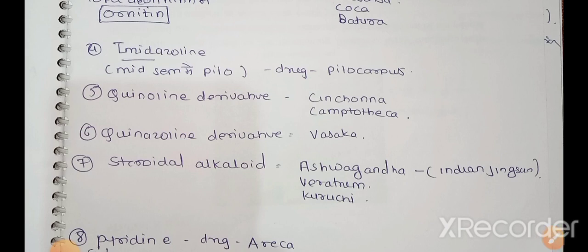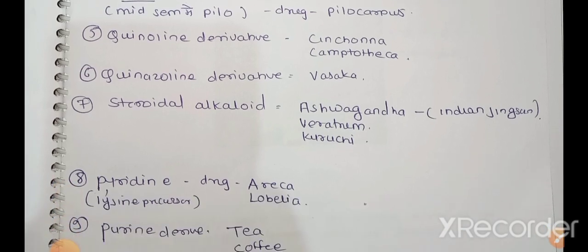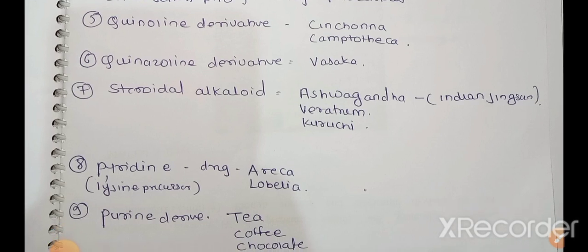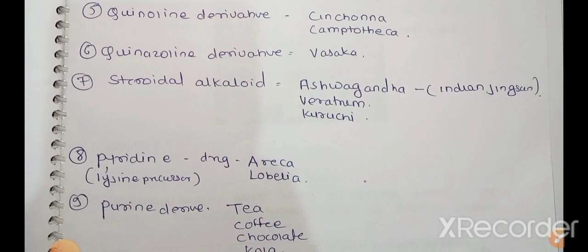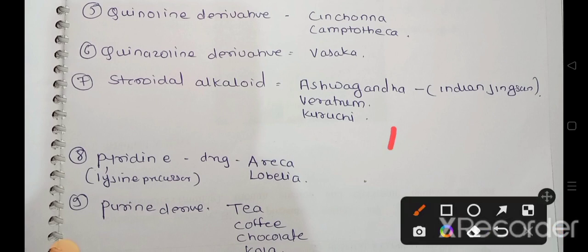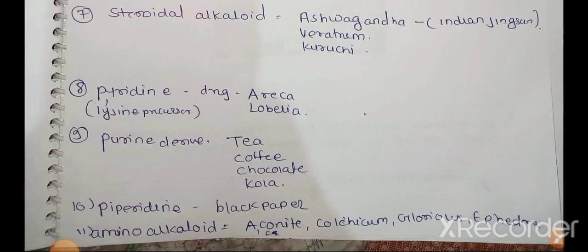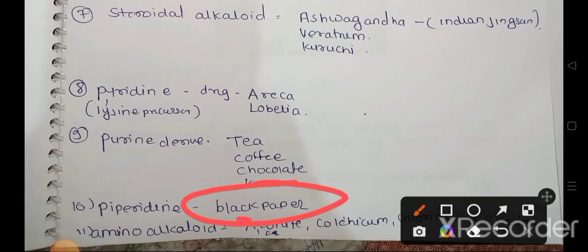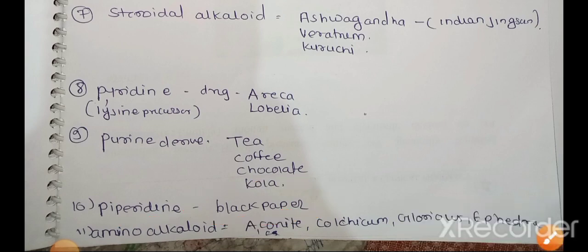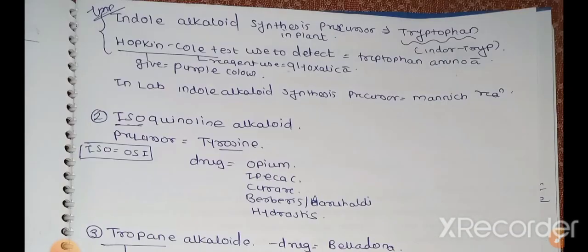After that, pyridine derivatives - which drugs come under this? Areca and lobelia. The precursor used for pyridine is lysine. Lysine is an amino acid used as precursor for synthesis of pyridine. After that, purine derivative - drugs that come are tea, coffee, chocolate, and cola. These come under purine derivative. After that, piperidine derivative includes black pepper - remember from pepper, piperidine derivative. And amino alkaloids include aconite, colchicum, gloriosa, and ephedra.